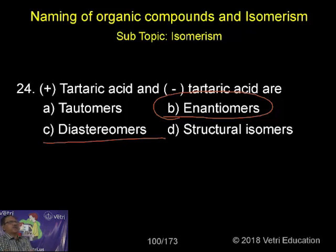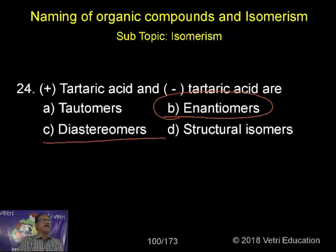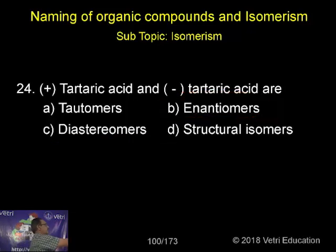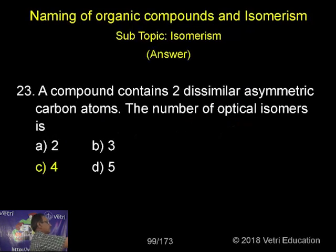What are diastereomers? Optically active compounds having the same molecular formula but one will not be the mirror image of the other — that is diastereomers.